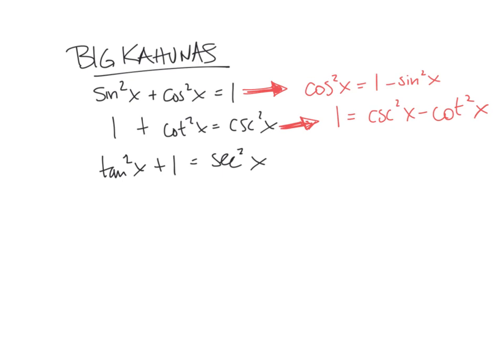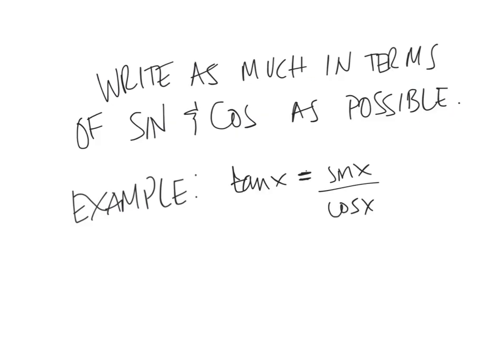The second hint is to write as much as you can in terms of sine and cosine. So if you see in one of these problems, let's say tan(x), I suggest—highly recommend—changing that into sin(x) over cos(x). If you see two or three different trig functions, you're going to want to write them as something that is equivalent.